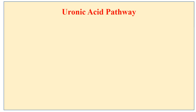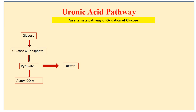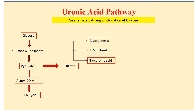The Uronic Acid Pathway is an alternative pathway for oxidation of glucose. Normally, glucose is converted to glucose-6-phosphate, which is further converted to pyruvate in aerobic glycolysis, or to lactate in the anaerobic glycolytic pathway. This pyruvate is converted to acetyl-CoA and enters the TCA cycle. Glucose-6-phosphate can also be utilized in glycogenesis, HMP shunt, and glucuronic acid formation.